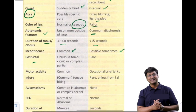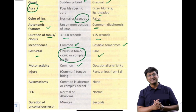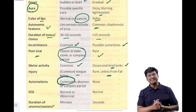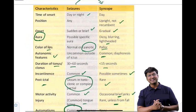Further differences: autonomic features are common in syncope but not seizures. Duration of tonic or clonic activity in seizures is 30 to 60 seconds; less than 15 seconds suggests syncope. Incontinence is very common in seizures, sometimes present in syncope. Post-ictal confusion is very common in epilepsy but not in syncope. Motor activity with tonic-clonic movements occurs in epilepsy; syncope has only very brief jerks. Tongue bite and injury may occur in seizures; injury is rare in syncope unless the patient falls. Automatisms are common in seizures. EEG may be normal or abnormal in seizures; usually normal in syncope. Duration of unconsciousness: a few minutes in seizures, a few seconds in syncope.